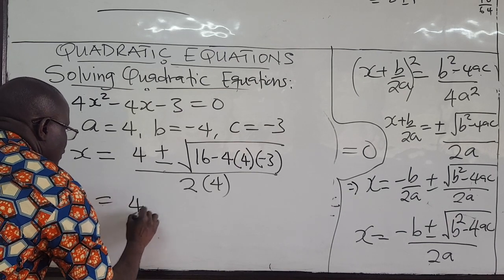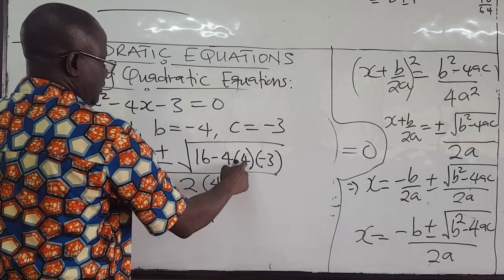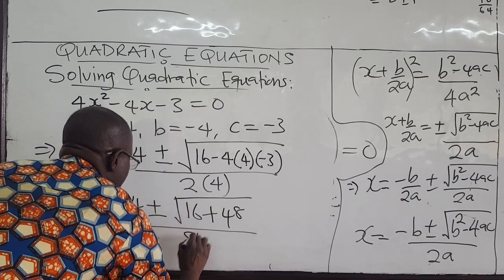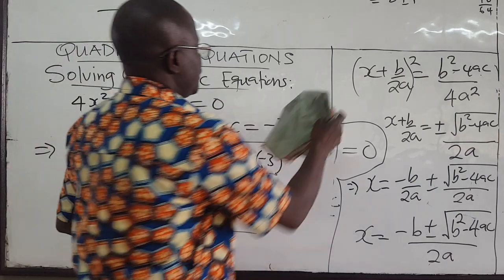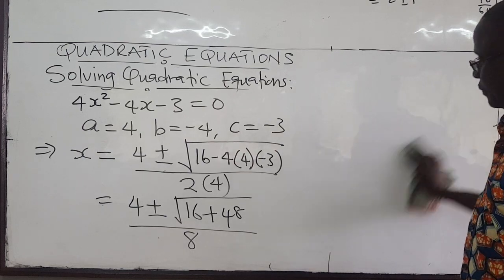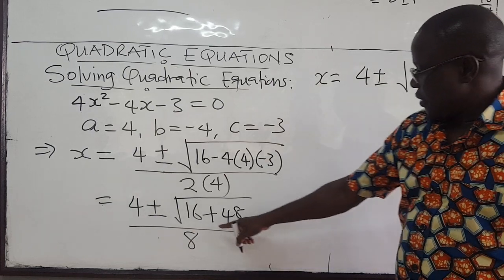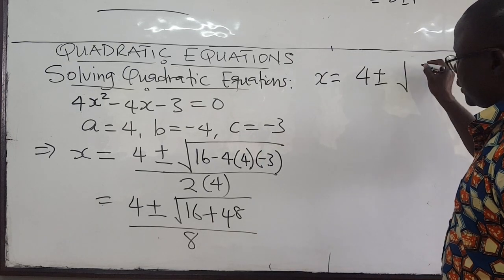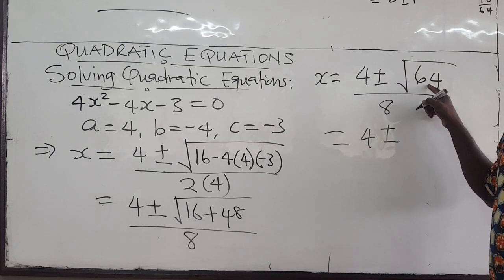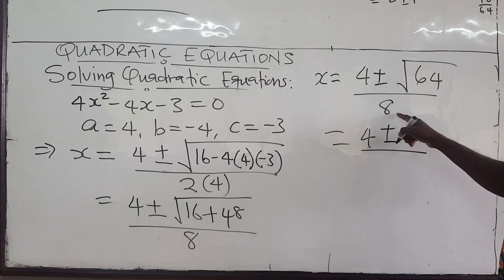This gives us 4 plus or minus the square root of 16 — minus times minus becomes plus — 16 times 3 is 48, so 16 + 48, all over 2 times 4 = 8. So we have x = 4 plus or minus the square root of (16 + 48 = 64), all over 8. The square root of 64 is 8, so this is 4 plus or minus 8 all over 8.